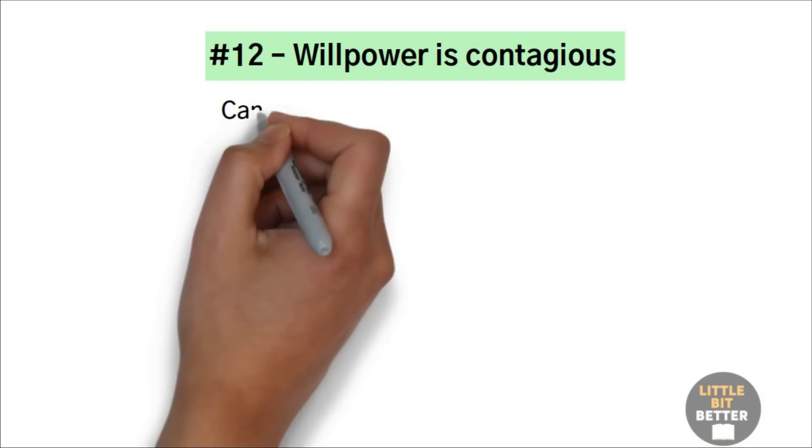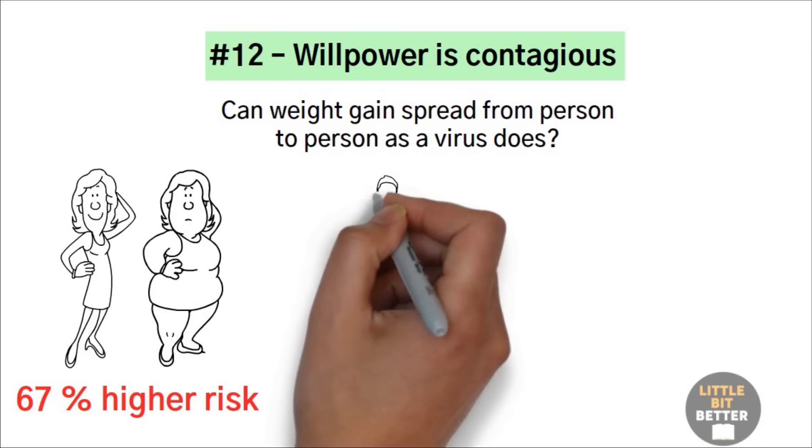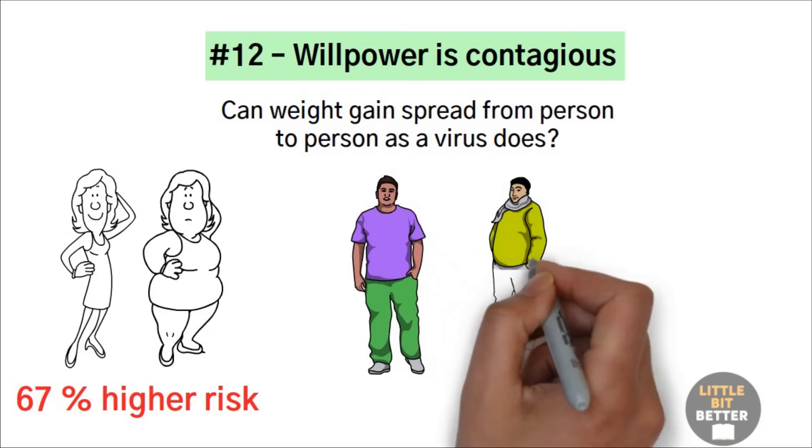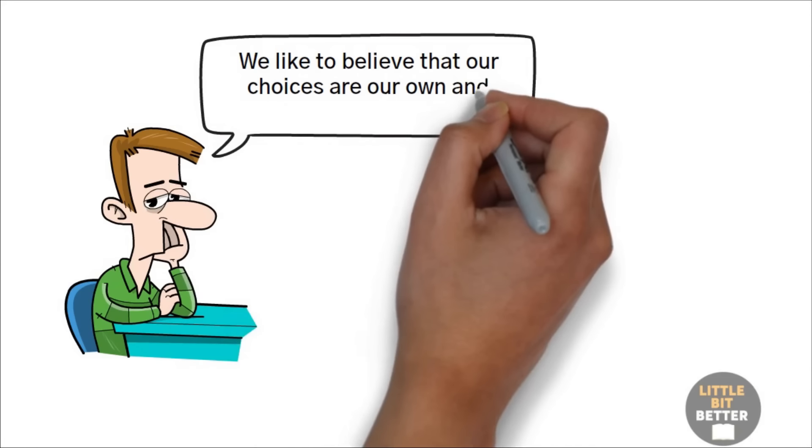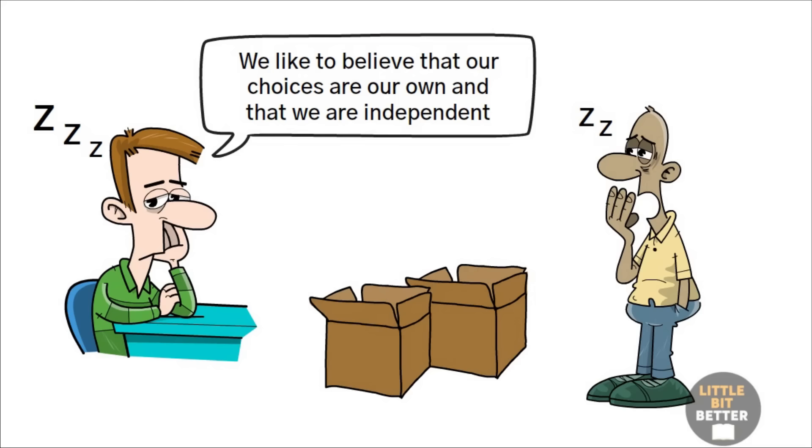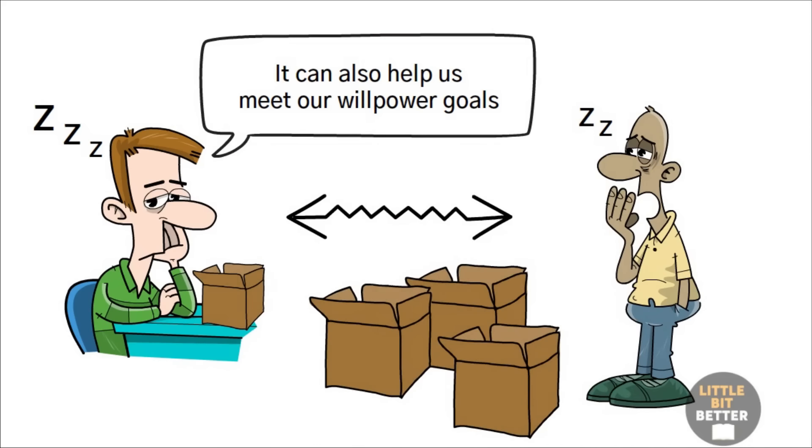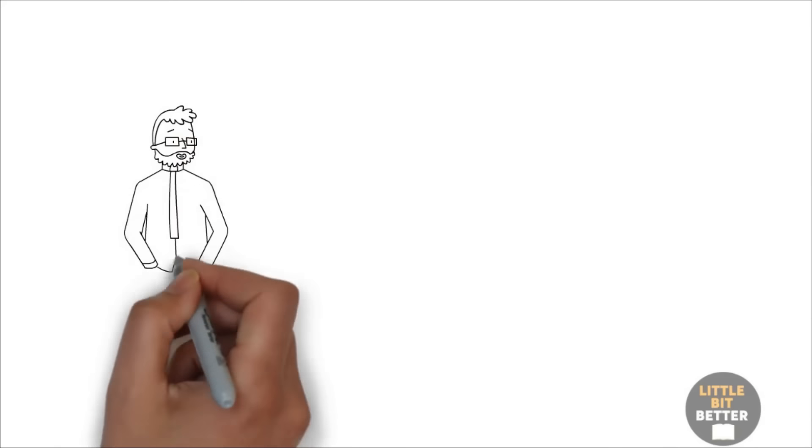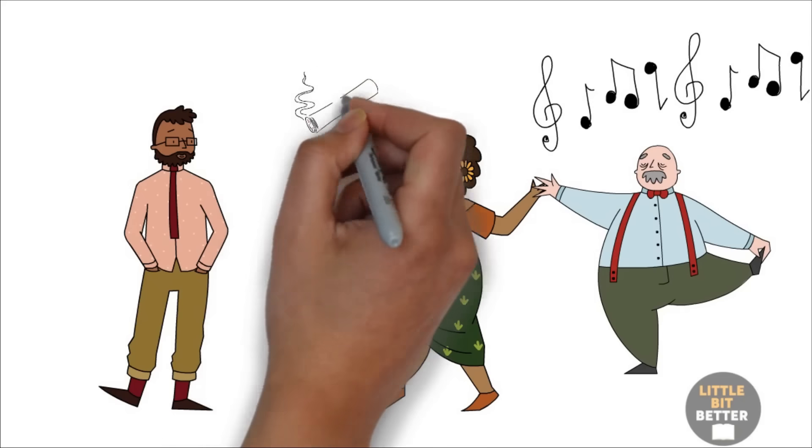Number 12. Willpower is contagious. Can weight gain spread from person to person as a virus does? Studies show that if you had an obese sister, you had a 67% higher risk of becoming obese too. They also found out that when a friend became obese, a person's own future risk of becoming obese increased by 171%. You've probably heard stories about people who started smoking because their friends smoked or who gained bad habits from their spouses. So this shouldn't be such a surprise. But the truth is that we like to believe that our choices are our own and that we are independent. So we refuse to see how other people's behaviors can influence ours. And our self-control is not immune to that influence, which often gets us into trouble. However, it can also help us meet our willpower goals. Bad habits can spread from person to person, but positive changes can too. For example, you can find people who share the behavior you aspire to and get closer to them. If you're trying to stop smoking, hanging out with non-smokers will help.